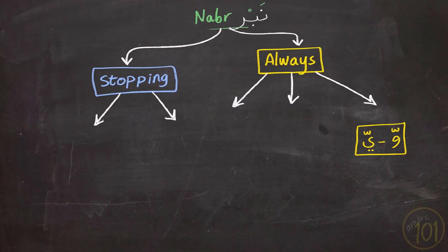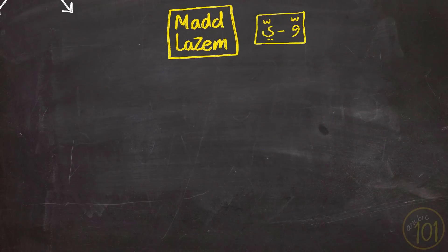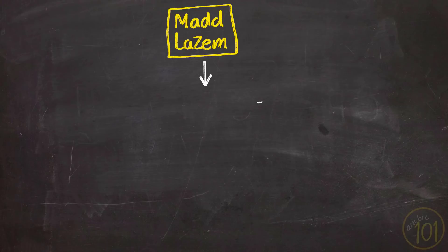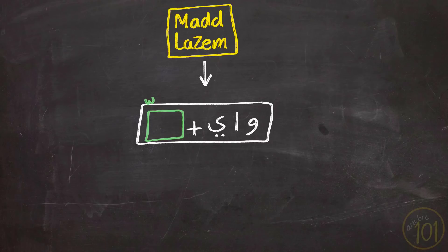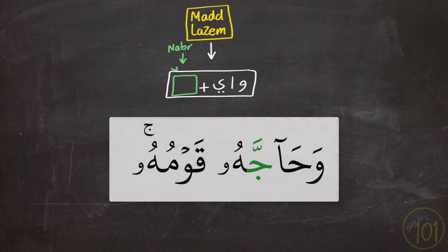The second case when we have to apply stress is when performing مَدْ لَازم. Now مَدْ لَازم requires a Mad letter Wao, Alif or Ya that is followed by a letter that has Shadda. So when we get to that letter with Shadda, you have to apply stress or Nabr on that part to highlight the duplicated letter that would otherwise be overshadowed by the Mad of Alif, Wao or Ya.